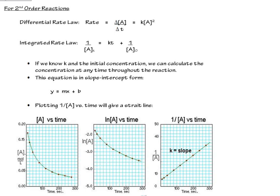We've looked at graphs of first-order reactions; now we want to look at graphs of a second-order reaction. A second-order reaction would have a differential rate law that looks like this: the rate R equals the constant times the concentration of reactant A to the second power. Essentially, if you double the concentration of reactant A, you'd increase the rate by 4.